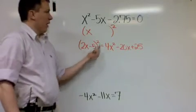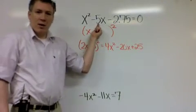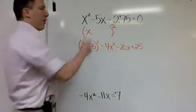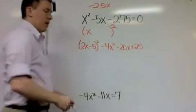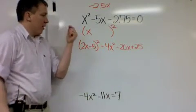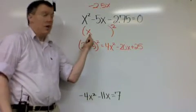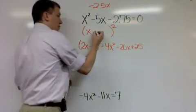So if I halve negative 5x, half of that is negative 2.5x. And then I divide it by the first term, the first term right here is x, so all it is is minus 2.5.